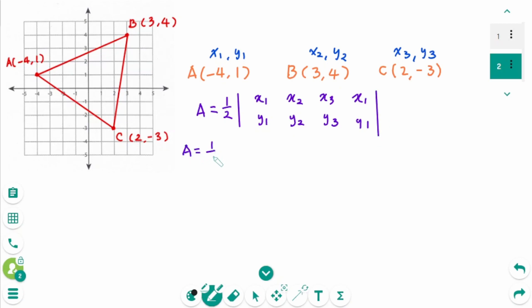Then area equals one-half times the absolute value sign. Multiply diagonally: x1 times y2, plus x2 times y3, plus x3 times y1, minus the other way: x2 times y1, plus x3 times y2, plus x1 times y3, then cross. This is the formula.